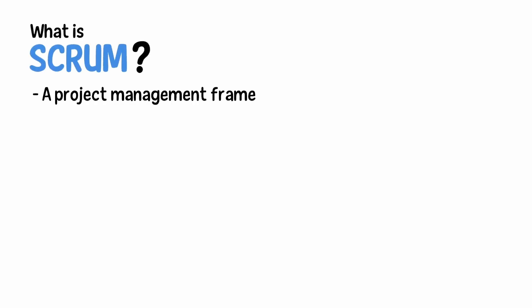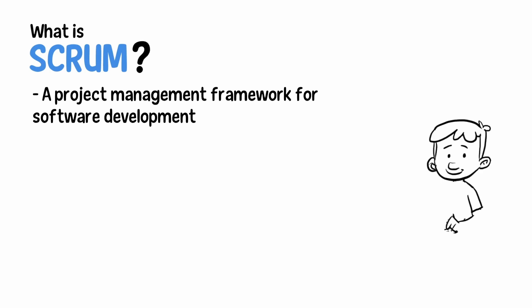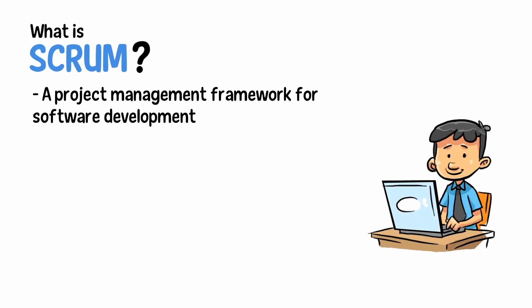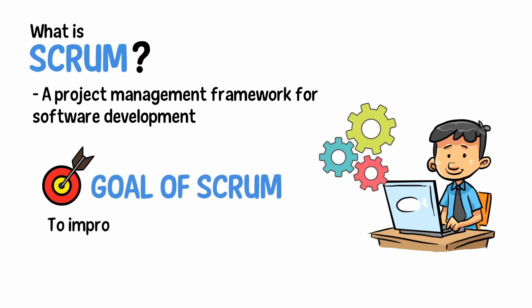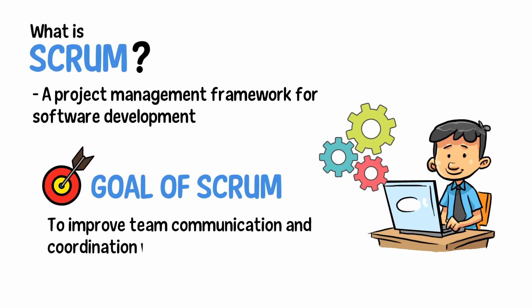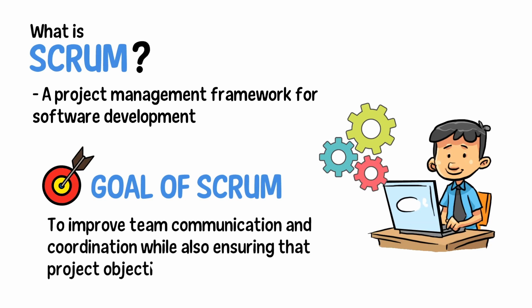What is Scrum? Scrum is a project management framework for software development. It is most commonly used in the field of software engineering, but it has also been adapted for use in other industries. The goal of Scrum is to improve team communication and coordination while also ensuring that project objectives are met.